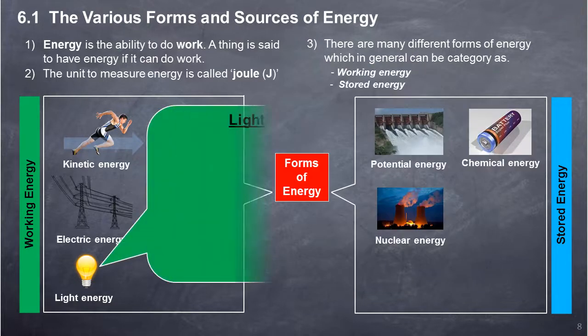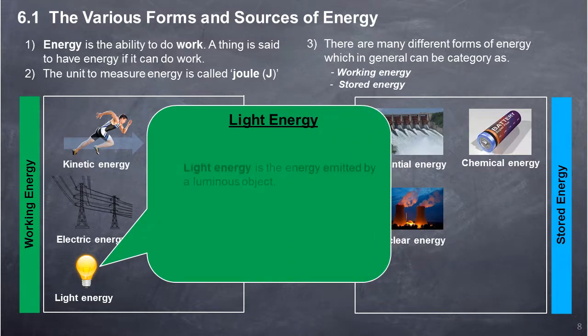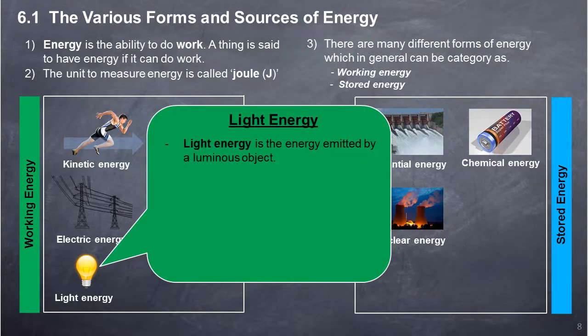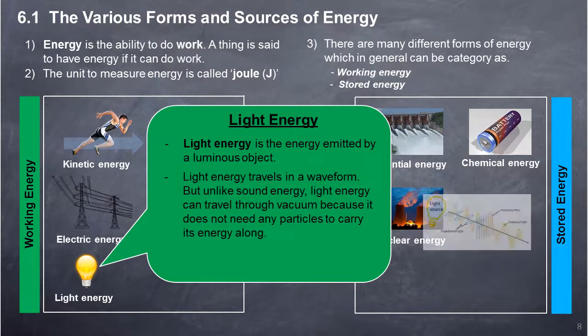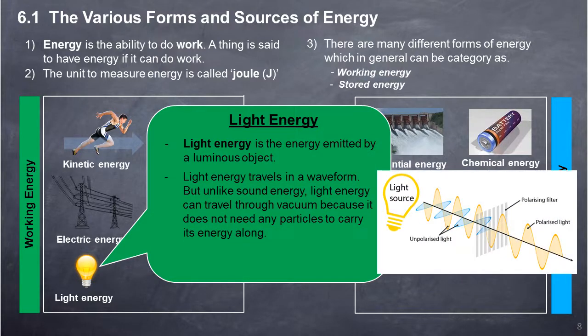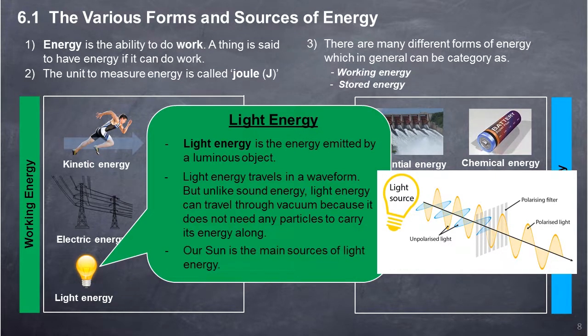Light Energy: Light energy is the energy emitted by a luminous object. Light energy travels in wave form. But unlike sound energy, light energy can travel through vacuum, because it does not need any particles to carry its energy along. Our sun is the main source of light energy.